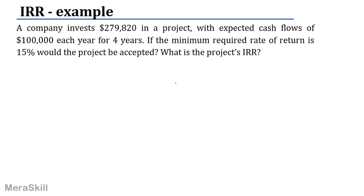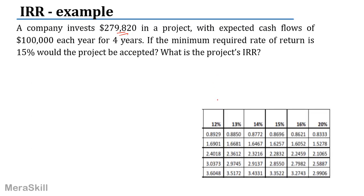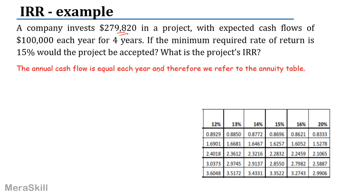Now let's take an example. Students, there could be different ways of doing it, so I am explaining a few things — be very clear, go slow. A company invests $279,820 in a project with expected cash flows of $100,000 each for four years. If the minimum required rate of return is 15%, would the project be accepted, and what is the project's internal rate of return?